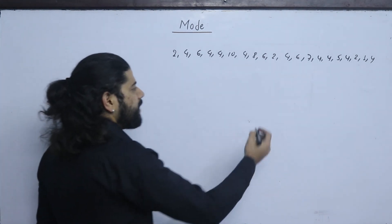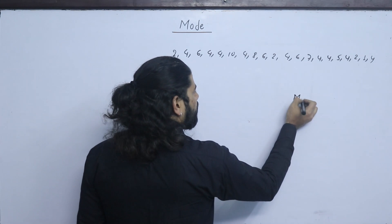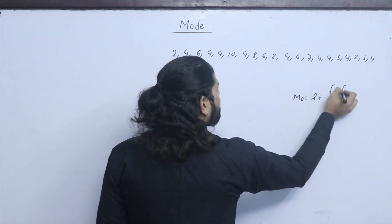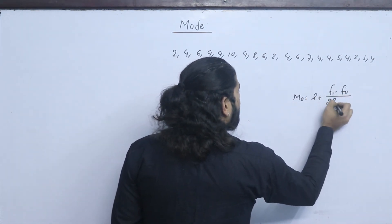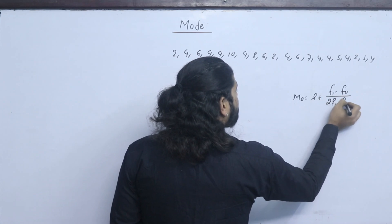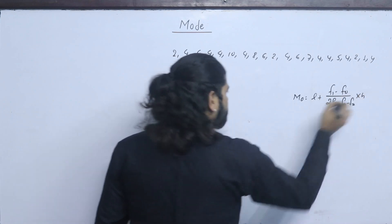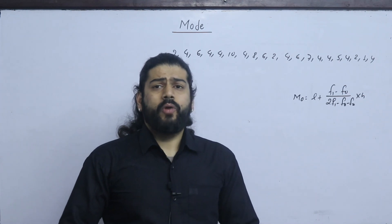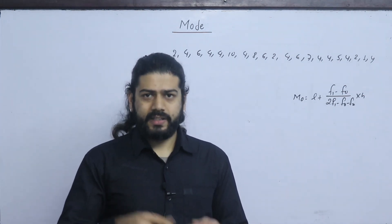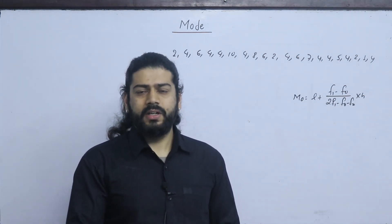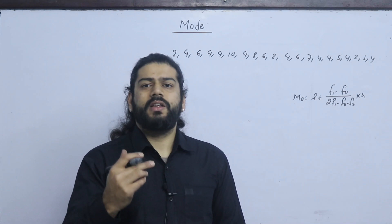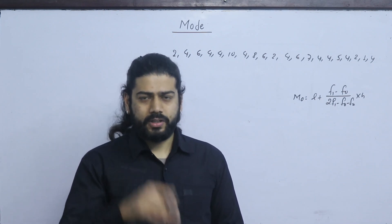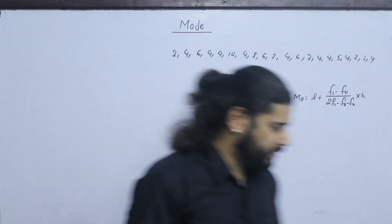In the continuous series, we have class intervals. For this, the mode formula is: l plus f1 minus f0, upon 2f1 minus f0 minus f2, into h. This is how we calculate the mode for a continuous series.